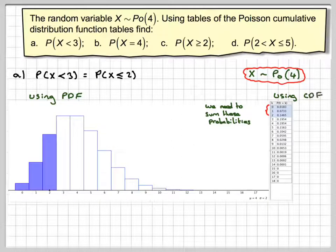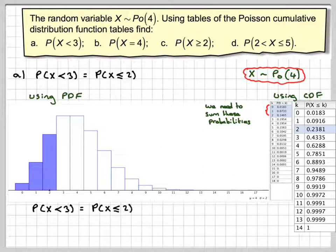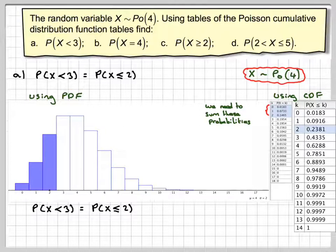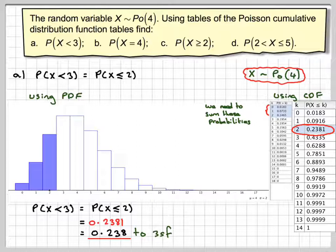These are the CDF tables we actually want. We look for 2, because we want less than or equal to 2. This is how the tables work: the probability that X is less than 3 equals the probability that X is less than or equal to 2, which is 0.2381 from the tables. Rounded to 3 significant figures that is 0.238.